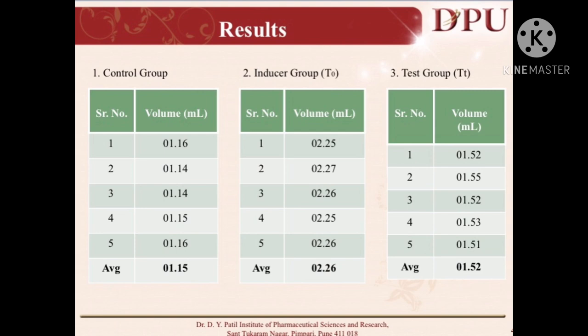Now it is stable — we have to record using this pedal. Finally, these are the results. For the evaluation purpose we used three groups: the first group is the control group, the second is the inducer group, and the third is the test group. For each group we have taken 5 readings and calculated the average. For the control group the average volume is 1.15; for the inducer group the average volume is 2.26; and for the test group the average volume is 1.52.